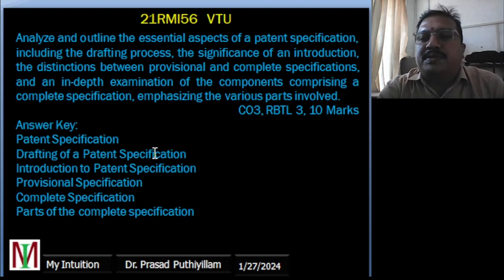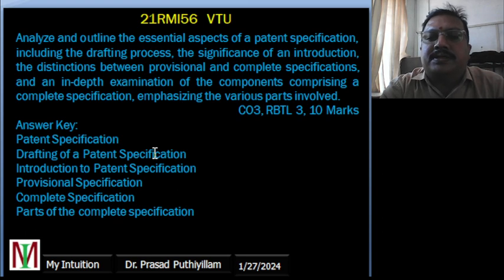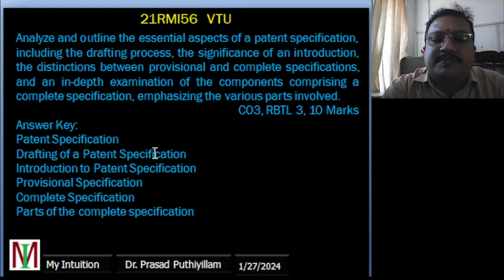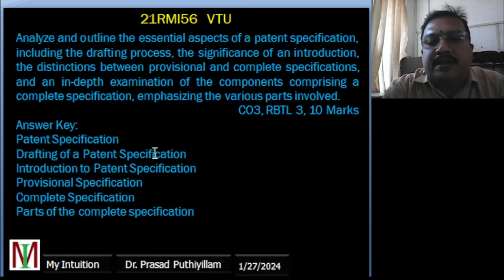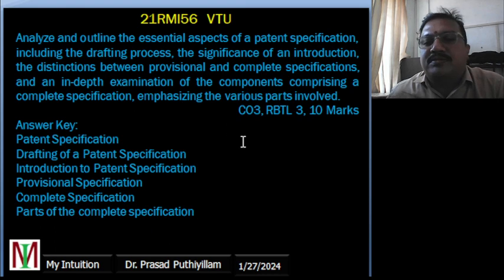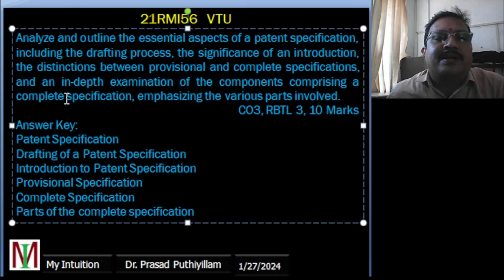The question asks: 'Analyze and outline the essential aspects of a patent specification, including the drafting process, the significance of the introduction, the distinction between provisional and complete specification, and an in-depth examination of the components comprising a complete specification.' More simply, you can ask to briefly explain or analyze the patent specification — that will be sufficient. I used AI tools to frame this question.